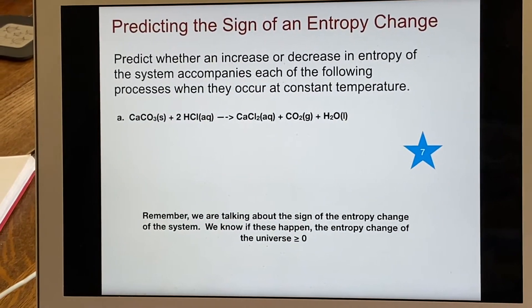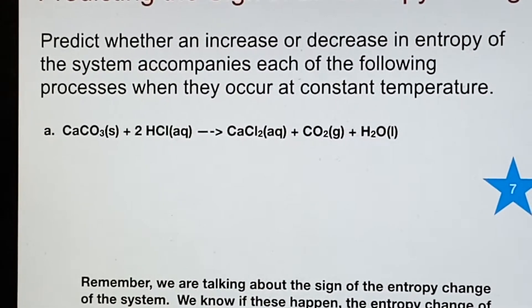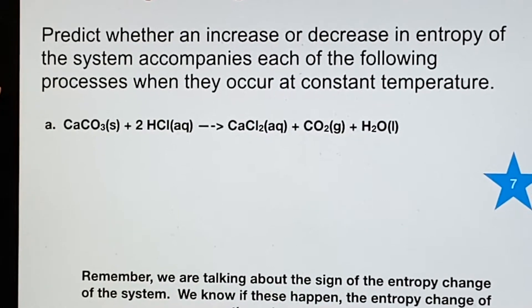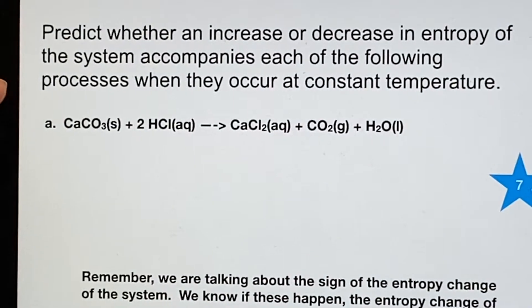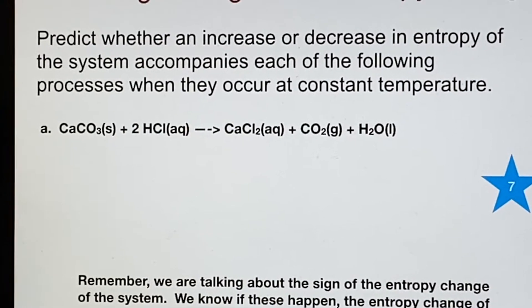So for this star seven, we are trying to decide whether there will be an increase or decrease in the entropy of the system. It says here that they're going to occur at constant temperature. So we had previously said that entropy increases when the temperature increases.